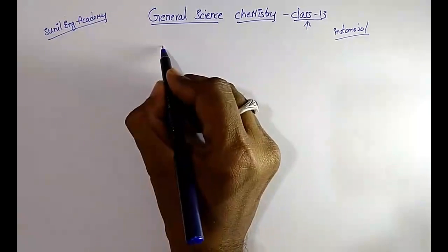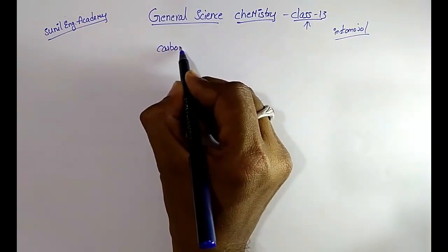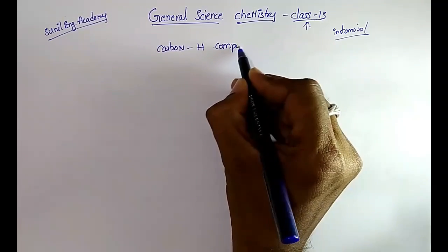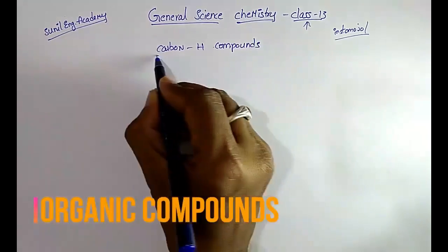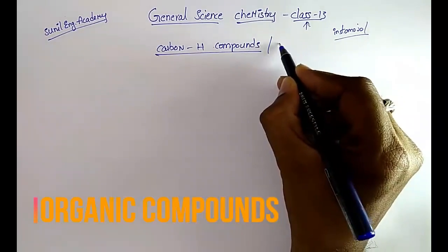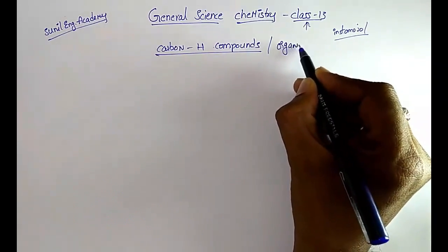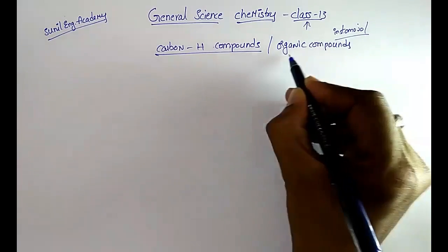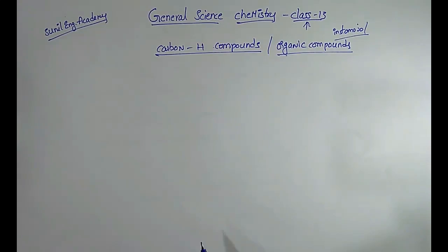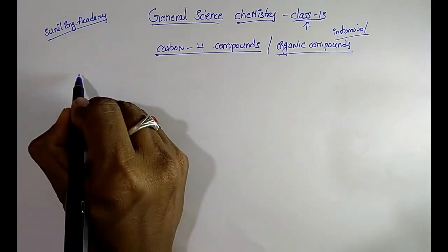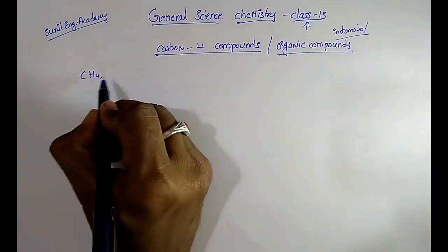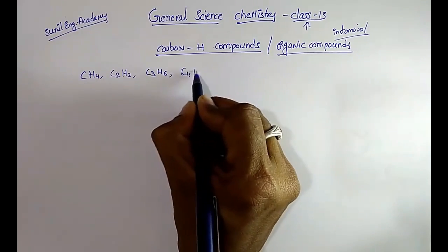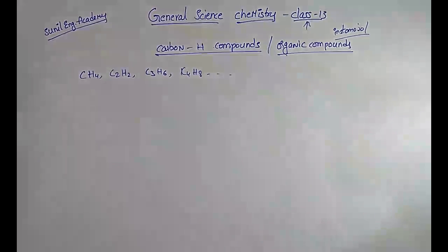In this class I am going to discuss carbon with hydrogen compounds — a very, very important topic. You can also call them organic compounds. In these organic compounds we may see formulas like CH4, C2H2, C3H6, C4H8, and so on.